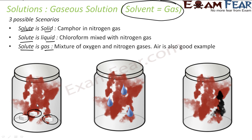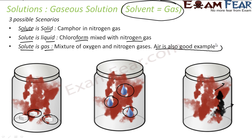When both solute and solvent are gas — for example, air, which contains oxygen, nitrogen, and carbon dioxide — they all come together to form a solution. That gives us three examples of gaseous solutions.